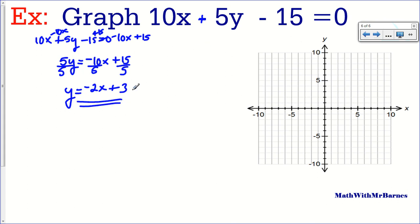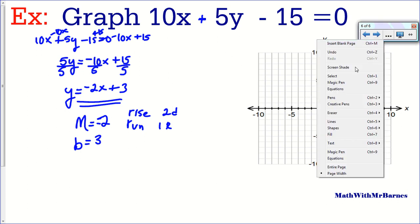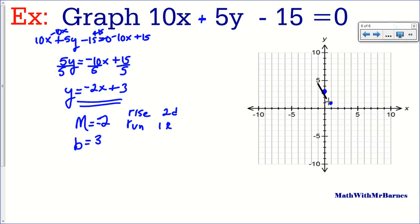There it is. Now what I need to do is graph this. This is slope-intercept form, so I recognize my slope is negative 2 and my B is 3. I plot my Y-intercept first — that's what B is. Now the slope is a set of instructions: rise over run. My rise is 2 down because it's negative 2, and my run is 1 to the right. So I go 2 down and then 1 to the right to get my next point. Then I just connect them up and extend the line. And there it is, there's my line.